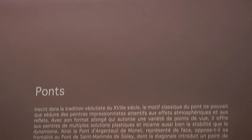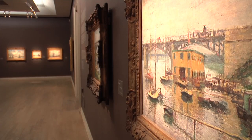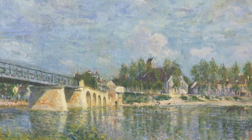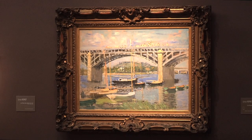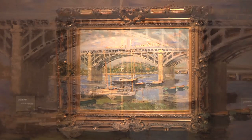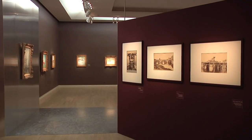Un exemple : une salle consacrée aux ponts. Les ponts, c'est un thème magnifique pour un peintre qui s'intéresse à la lumière et au reflet, bien entendu. Mais c'est aussi, en 1873, quand Monet peint à Argenteuil, le symbole de la France qui se reconstruit après la guerre de 1870, et le signe de la révolution industrielle en marche.